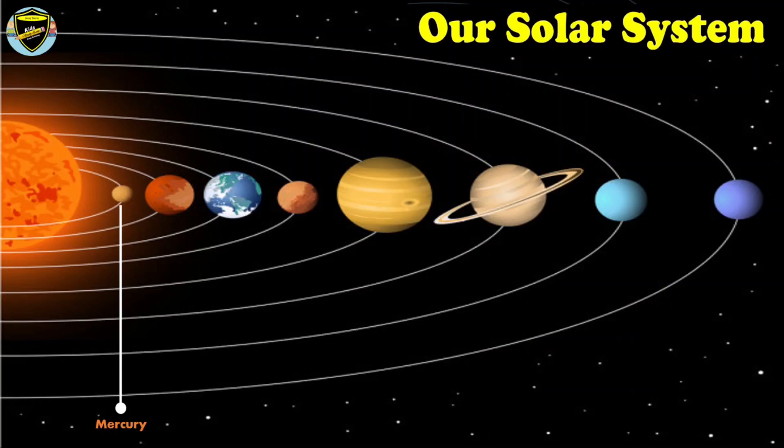The second planet in the solar system is Venus. Venus is also called morning and evening star.